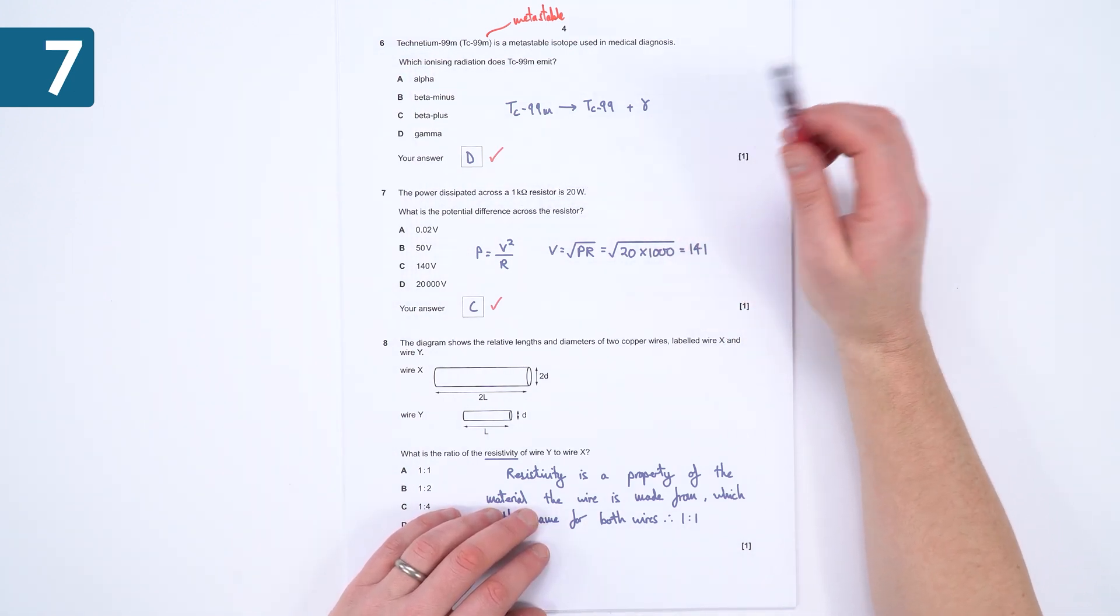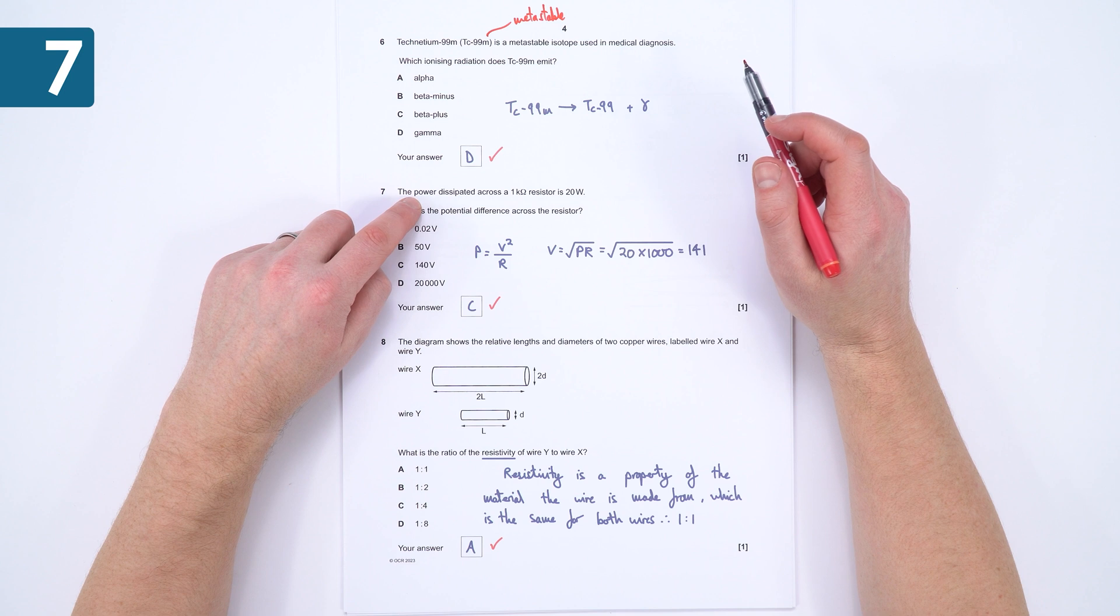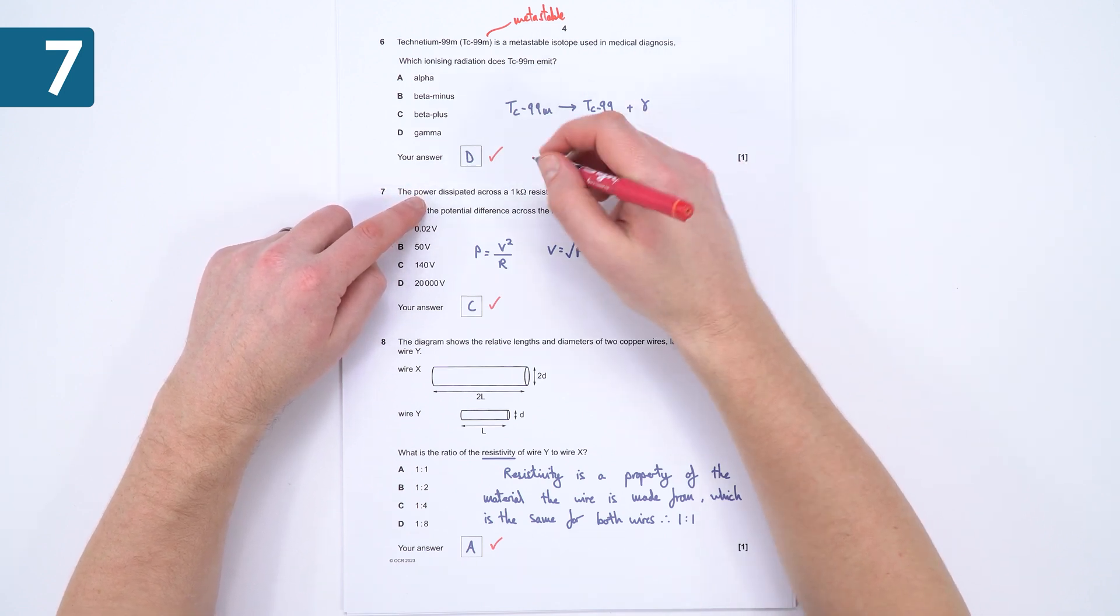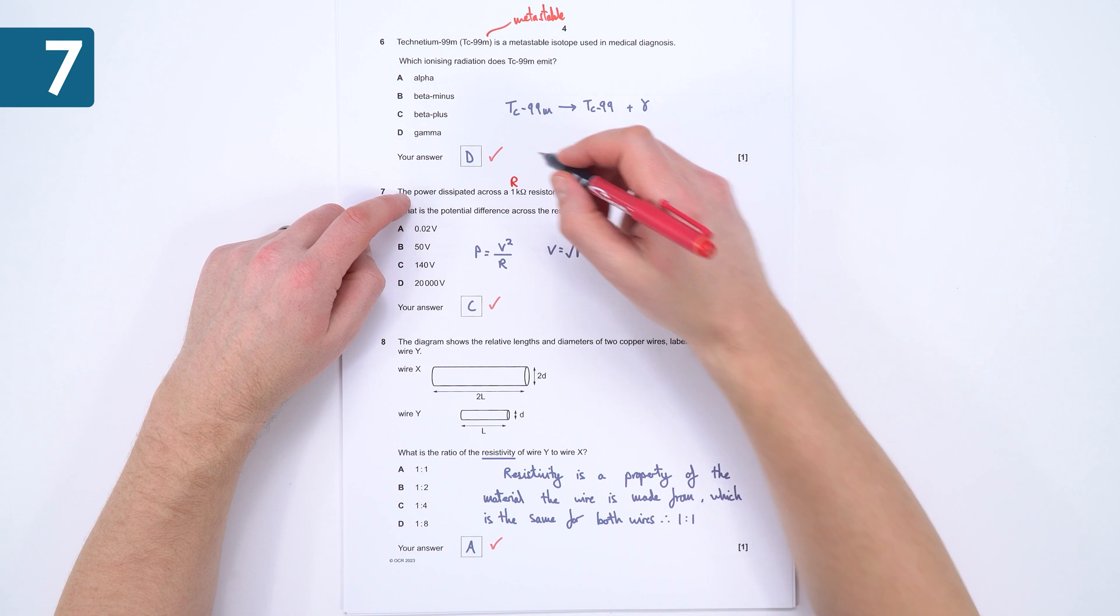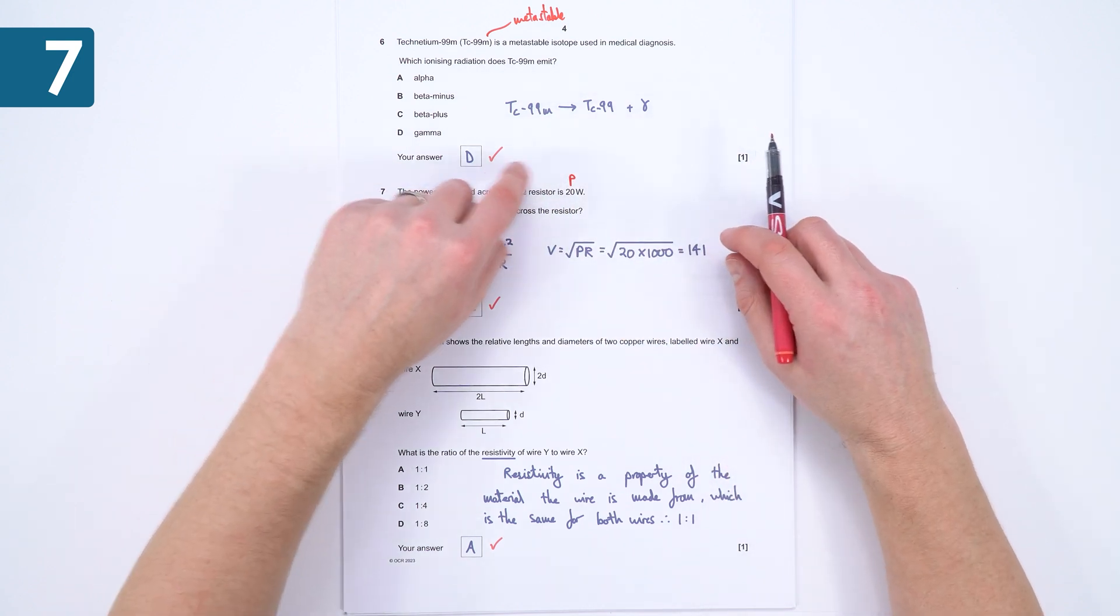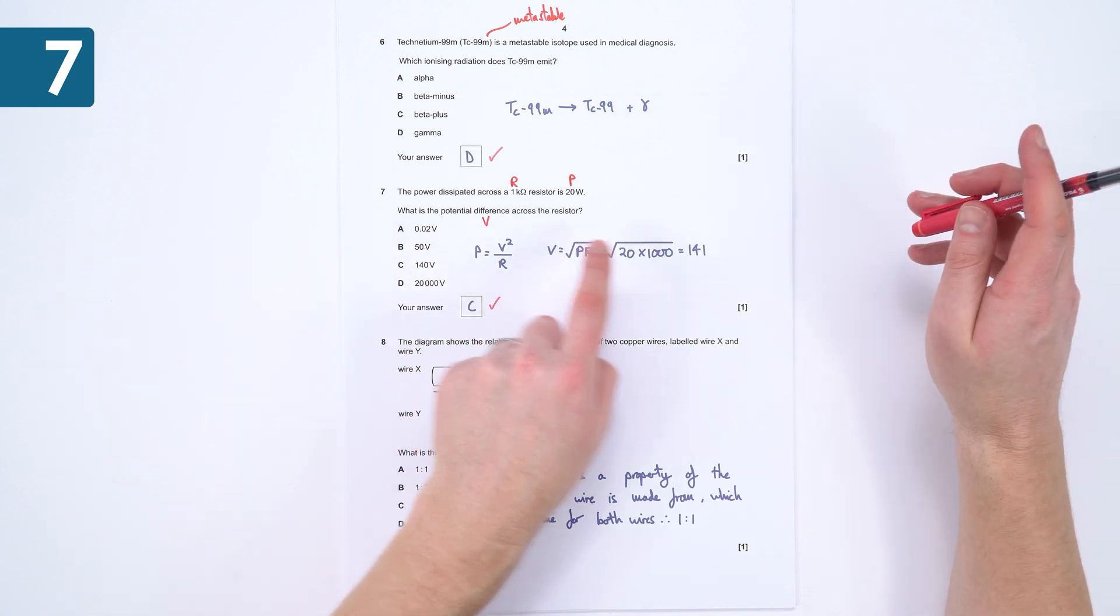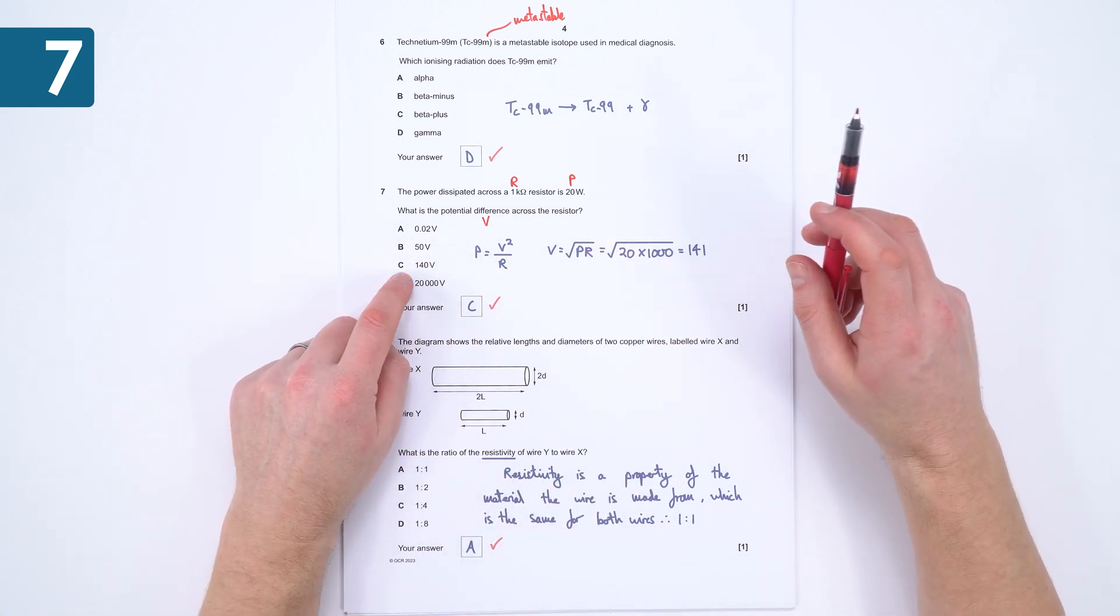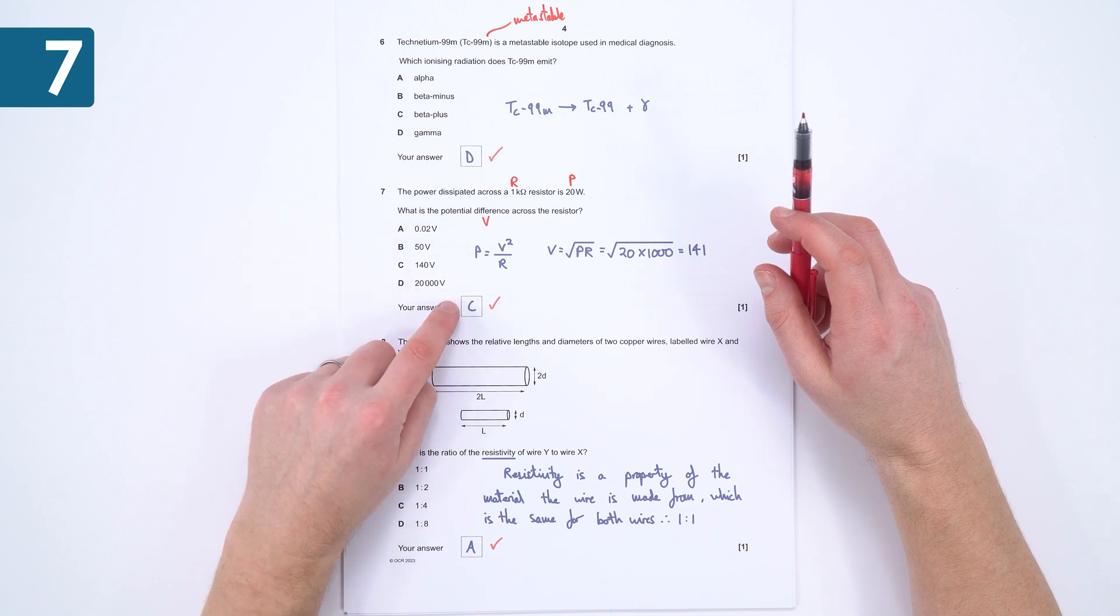This one here, a lovely question. We've got the power that we need, that we've been given here, we've got the resistance which is given to us, and we want to know the value of V, so the thing that links these together is P equals V squared over R. Rearrange, put the numbers in, and it's 141, so about 140 is the closest answer, so the answer is C.